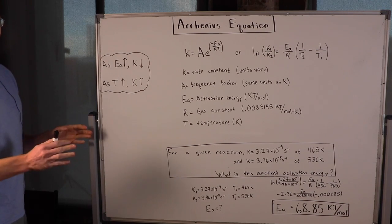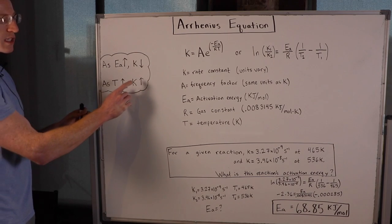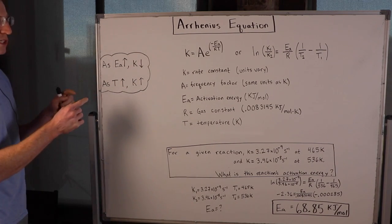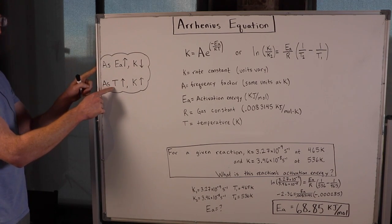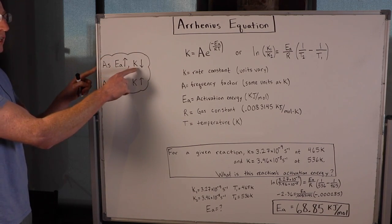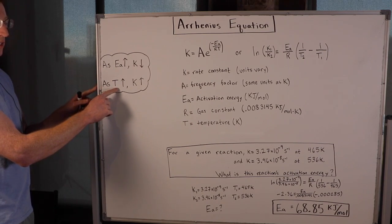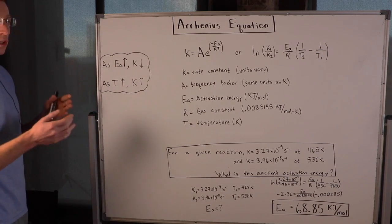In this video I'm going to talk about the Arrhenius equation. The Arrhenius equation tells us how the rate constant k changes based on activation energy and temperature. As activation energy increases, the rate constant decreases, and as temperature increases, the rate constant also increases.